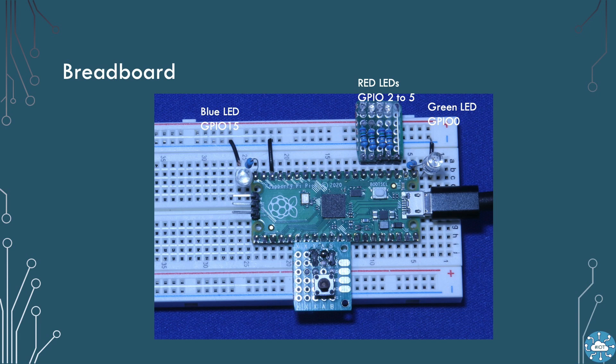My breadboard will look like this. I've connected ground to the top negative bar on the breadboard. Then we have a blue LED and resistor on GPIO 15 and a green LED on GPIO 0. I've cheated a bit for the four red LEDs by using a home built module.